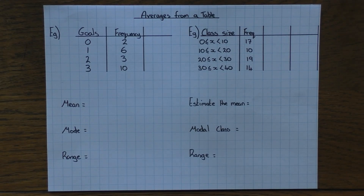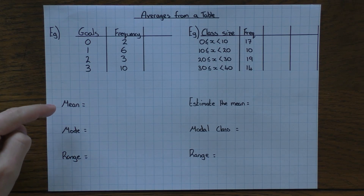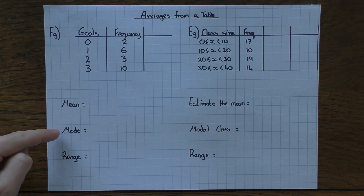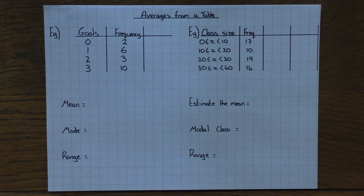Hi guys, in this video we're going to look at how we work out averages from a table. Just a quick one — in this video we're only going to be looking at the mean, mode, and range. I've done another video on how to find the median from a table, so check out that one if that's what you're after.